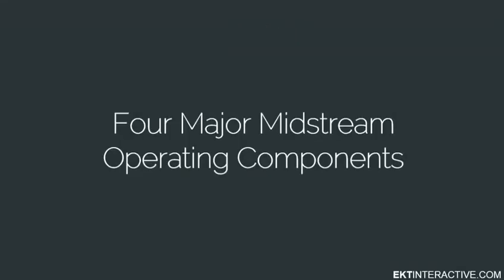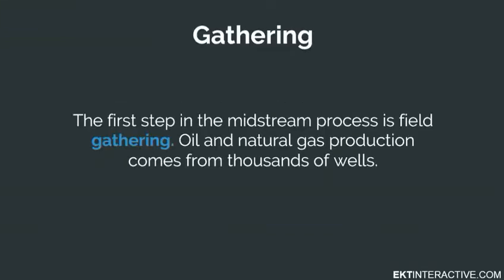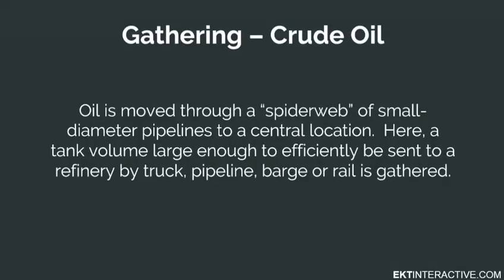Now, let's talk about the four major operating components of midstream. The first step in the midstream process is field gathering. Oil and natural gas production comes from thousands of wells. Oil is moved through a spider web of small diameter pipelines to a central location, where a tank volume large enough to efficiently be sent to a refinery by truck, pipeline, or barge, or even rail, is gathered.